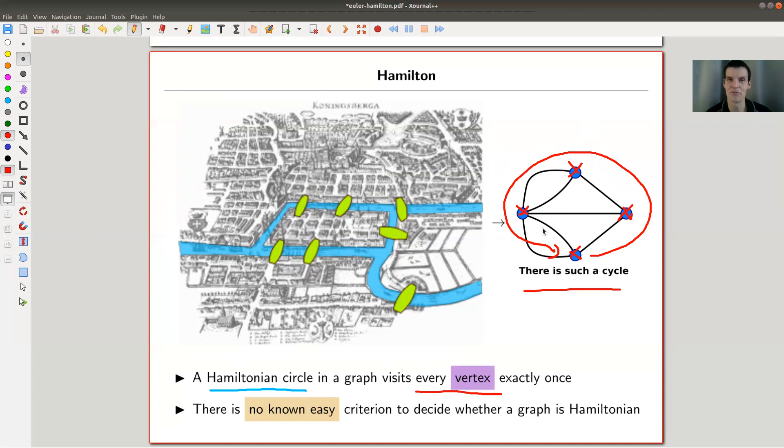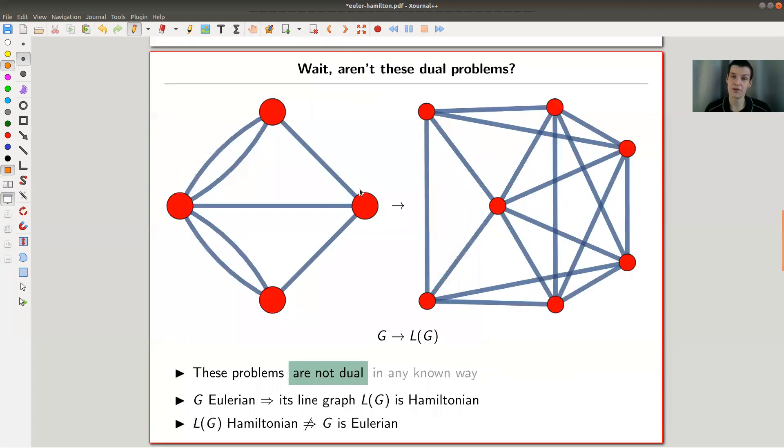To me, this looks like a dual problem. One is talking about visiting every edge once, and the other is talking about visiting every vertex once. So there should be some duality exchanging the two problems. Turns out there is no known duality. I should be careful - let me just say there's no known duality connecting the two, which I personally find very surprising.